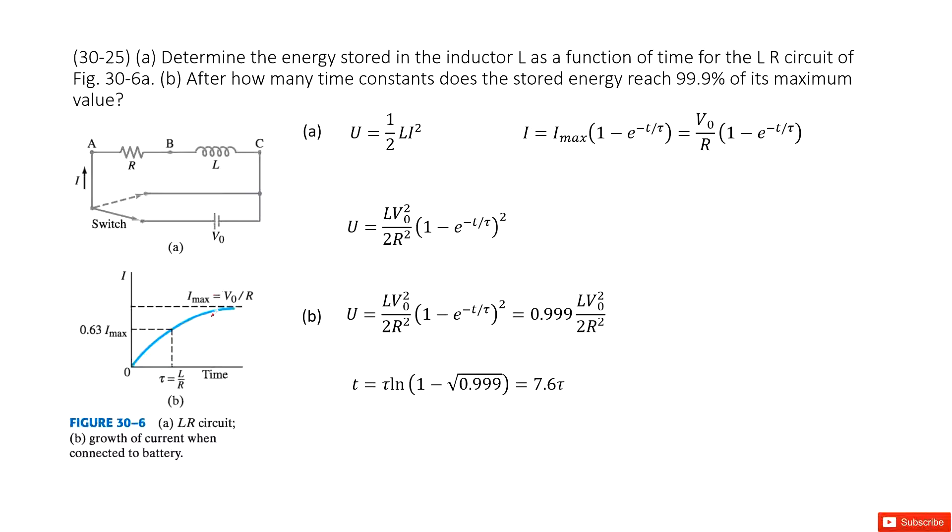If we want to write the function to describe the current changes with t, the function is there in our textbook. i equals i max times 1 minus e to the power negative t over tau. How to calculate the maximum current? From there we can say this is V0 divided by r.